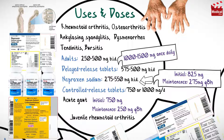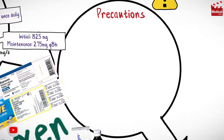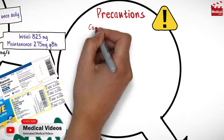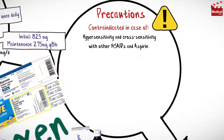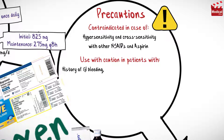Naproxen is also used for juvenile rheumatoid arthritis. In this case, the usual dose is 10 milligrams per kilogram per day. Naproxen is contraindicated in cases of hypersensitivity and cross-sensitivity with other non-steroidal anti-inflammatory drugs and aspirin.